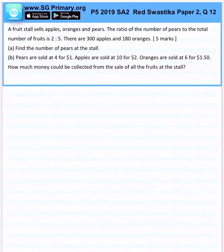The fruit store sells apples, oranges and pears. The ratio of the number of pears to the total fruits is 2 is to 5. There are 300 apples and 180 oranges. Find the number of pears at the store.